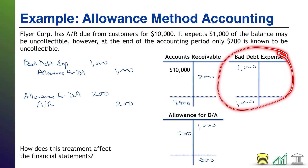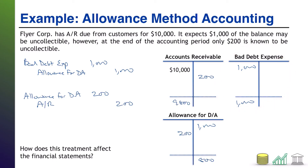Net income is supposed to reflect the revenues earned and costs incurred. Here's one of those situations where there's no way to keep both the income statement and balance sheet accurate — one is going to be favored over the other. In this case, it's the income statement that faces inaccuracy, because we did not incur a cost of $1,000 — at this point, we've only incurred a known cost of $200.